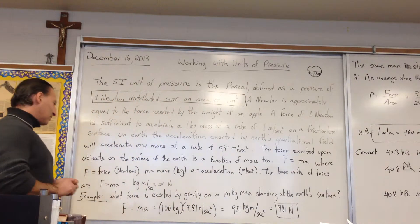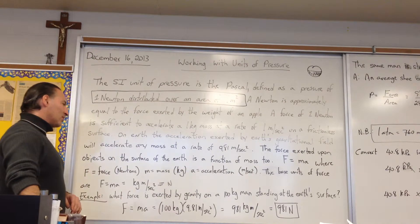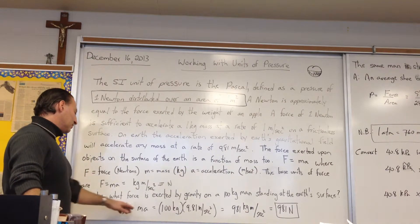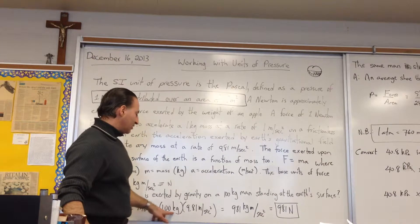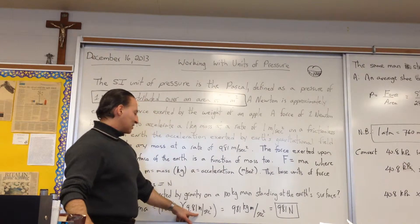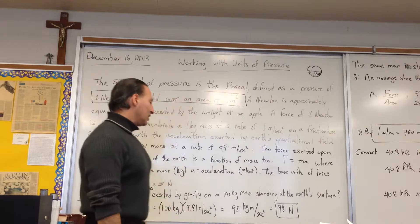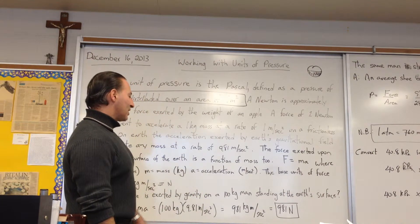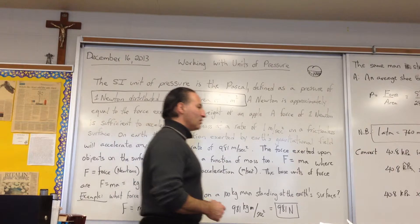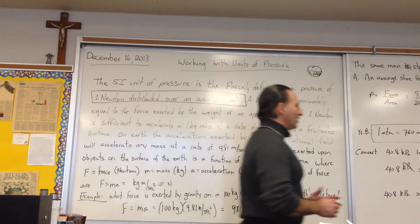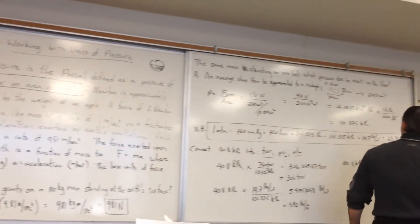As an example: what force is exerted by gravity on a 100 kilogram mass standing on the Earth's surface? Force equals mass times acceleration. The mass is 100 kilograms, and the acceleration due to gravity is 9.81 meters per second squared. You get 981 kilogram meters per second squared, which we can state as 981 newtons. So now you have more or less a ballpark understanding of how much the newton is.